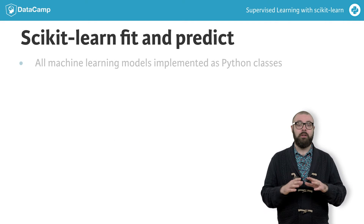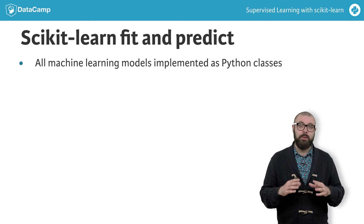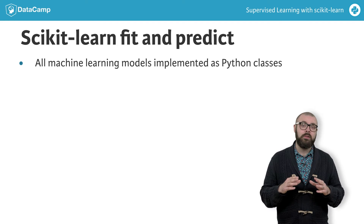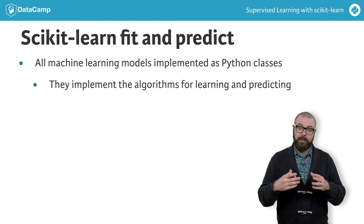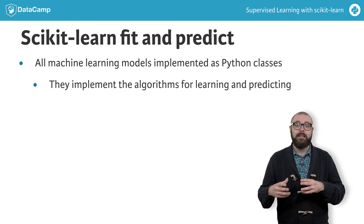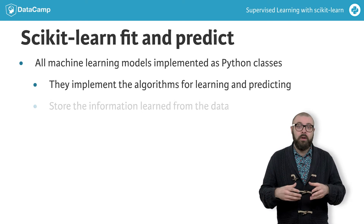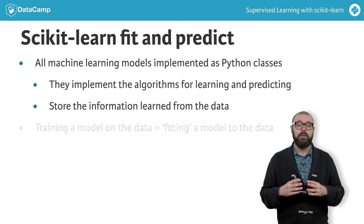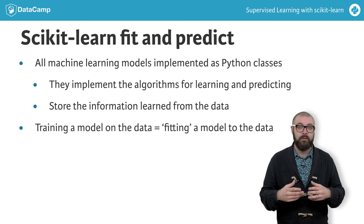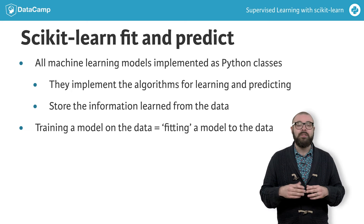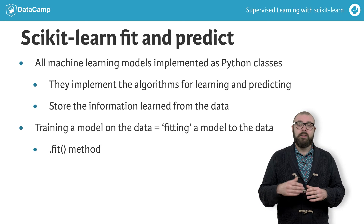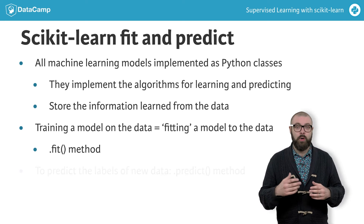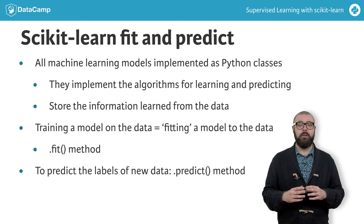All machine learning models in scikit-learn are implemented as Python classes. These classes serve two purposes: they implement the algorithms for learning a model and predicting, while also storing all the information that is learned from the data. Training a model on the data is also called fitting the model to the data. In scikit-learn, we use the fit method to do this. Similarly, the predict method is what we use to predict the label of a new unlabeled data point.